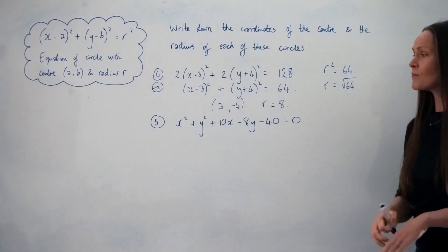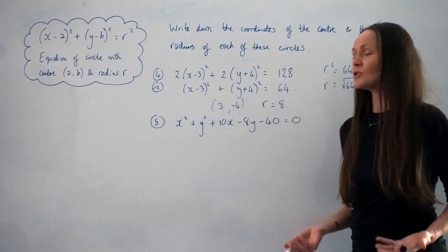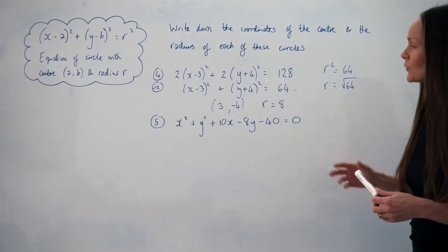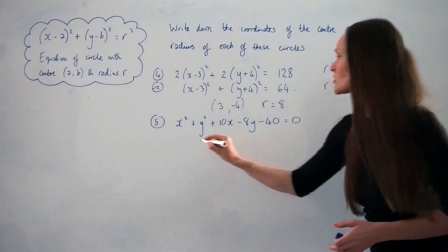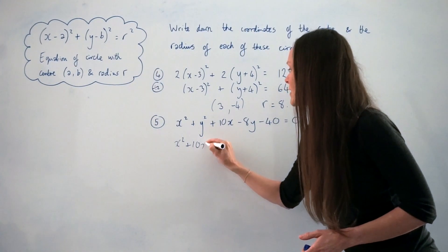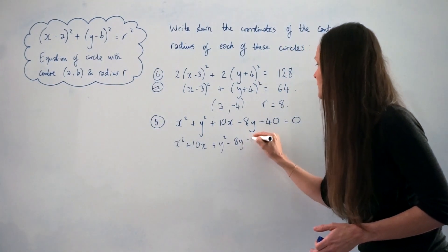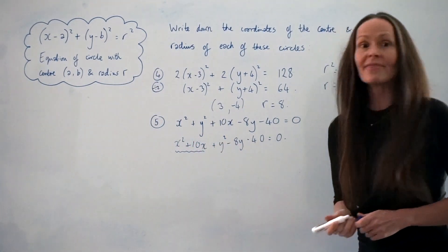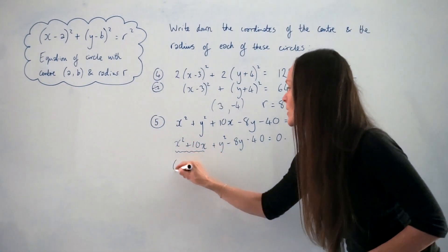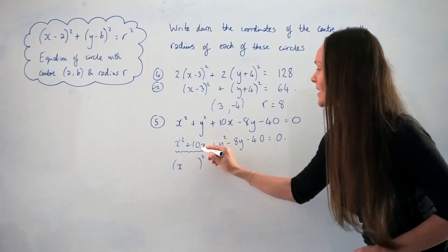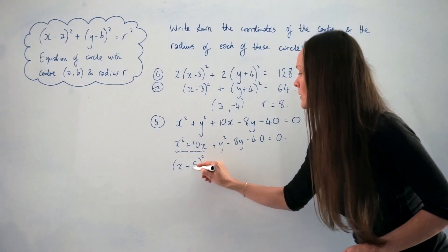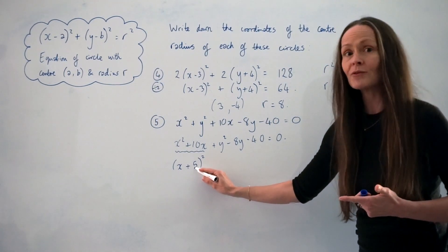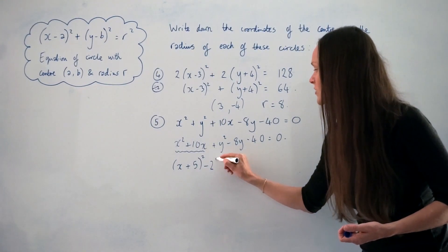In number 5, it's not written in completed square form. So I'm going to rewrite it in completed square form and then it will be much easier to work out the centre and the radius. First I'll group the x terms together: x squared plus 10x, and then the y terms: y squared minus 8y. Now I'm going to complete the square on the x terms. I take 10, divide it by 2 to get 5, so I write (x + 5) squared, but I have to remember to subtract 5 squared, which is 25.